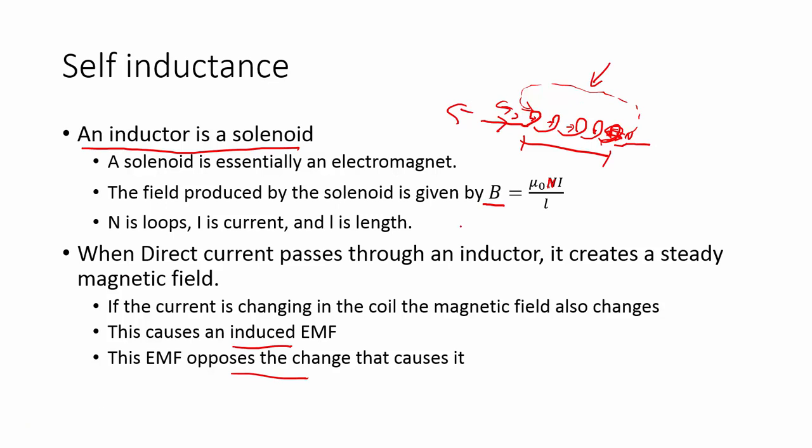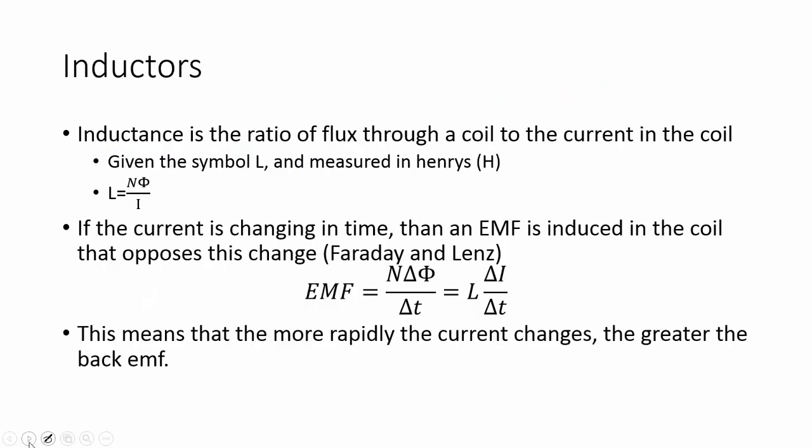Now, inductance is actually the ratio of flux through the coil to the current in the coil for a solenoid. And so the number of turns times the magnetic field divided by the current gives me this thing called inductance. And it's measured in Henrys. Henry is the same as an ohms second, kind of an interesting measure. But if the current is changing in time, then we can actually use the inductance to figure out the back EMF, which is why we would care. So if the current is changing in time, then the EMF is induced in the coil that opposes the change. And so we take the inductance of the coil times the change in current divided by the change in time, and that gets us our EMF. And it is a back EMF. It's against the change that causes it.